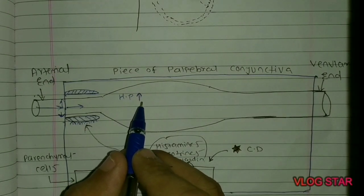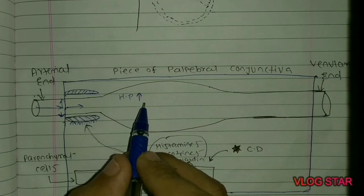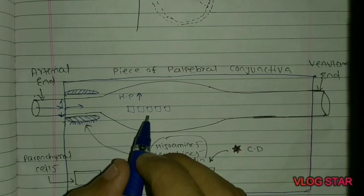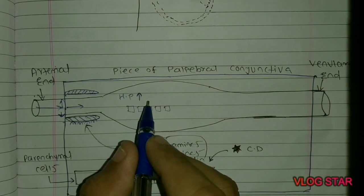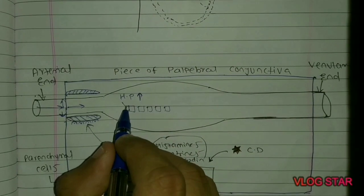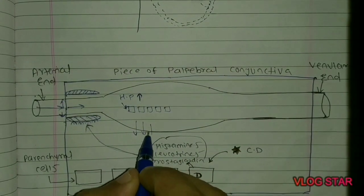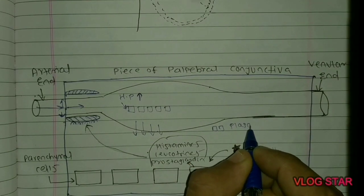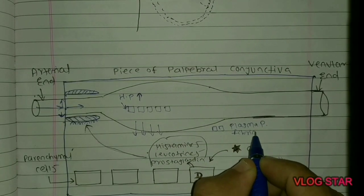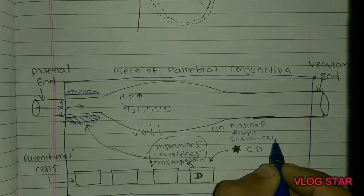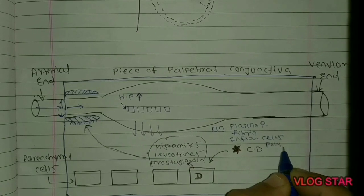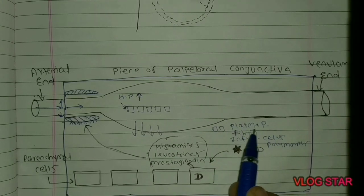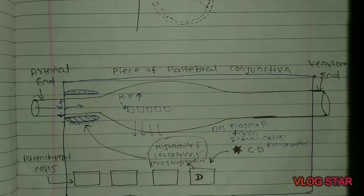Once this elevated hydrostatic pressure or outward driving force is established, it drives plasma proteins outside the blood capillary. Finally, there is exudation of plasma proteins, fibrin strands, inflammatory cells, and many polymorphs, resulting in inflammation.